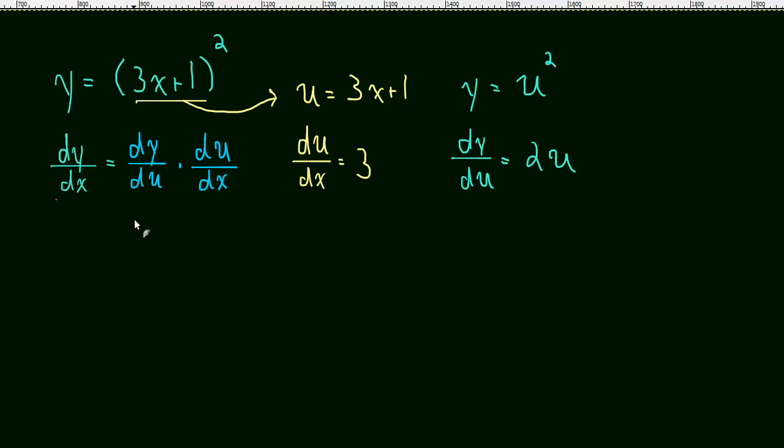dy du, that was 2u. du dx, that was just 3. So 2u times 3. Well we started in x's, we don't want to end in u's, so it would be easy enough to just write what u is. So this will become 2 times u, which is 3x plus 1, times 3.